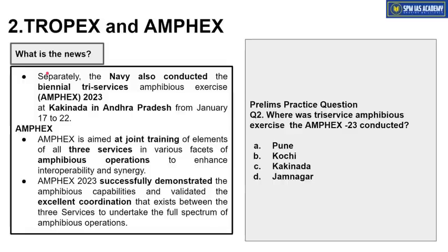Doosra, TROPICS exercise ke alawa ek aur exercise haal mein Indian Navy ne conduct karaya — uska naam hai MFIX. Indian Navy also conducted a biannual tri-service amphibious exercise called MFIX. Isko isliye amphibious exercise keh rahe hain kyunki it is not just conducted in water — it is also conducted on land. Toh land aur water dono jagah pe is exercise ko conduct karaya gaya. Teeno armed forces — Indian Navy, Indian Army, and Indian Air Force — ne milkar conduct karaya hai.